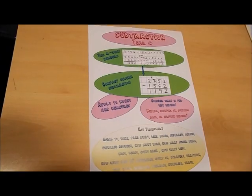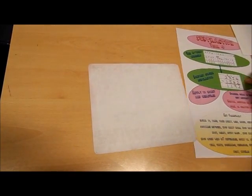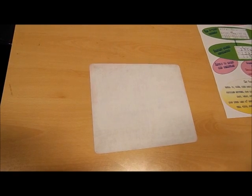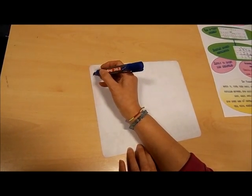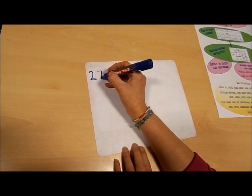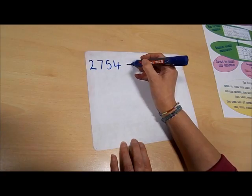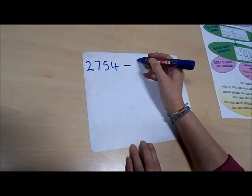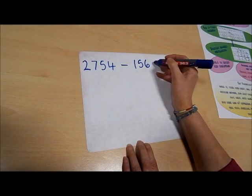Now we're thinking about subtraction in Year 4, and first of all we're going to subtract with four-digit numbers. So I'm going to write my number on the board. I've got 2,754 and I'm going to take away 1,562.